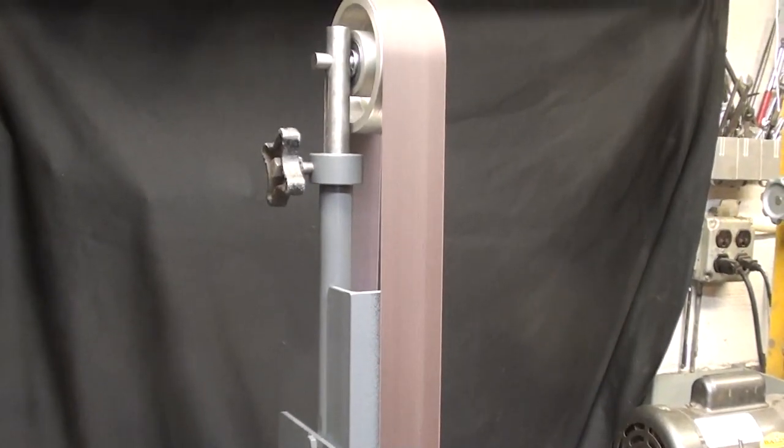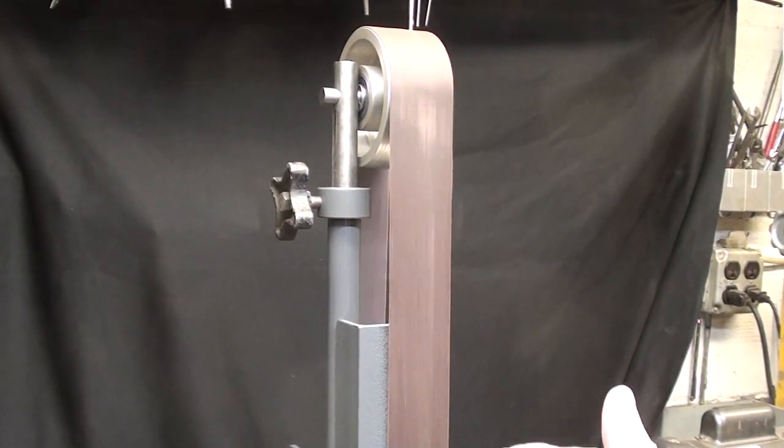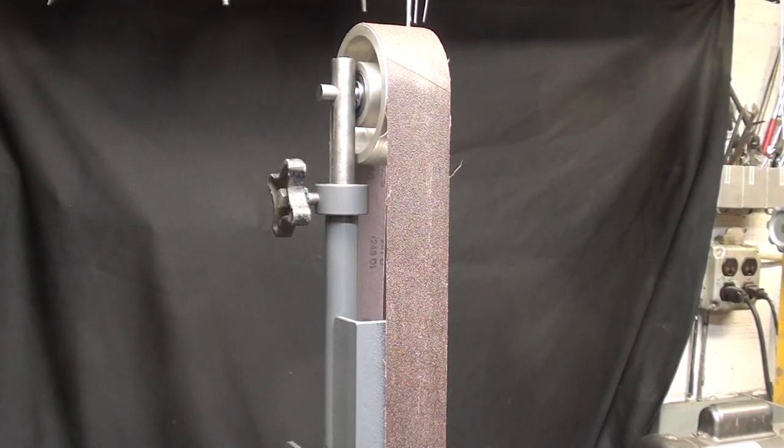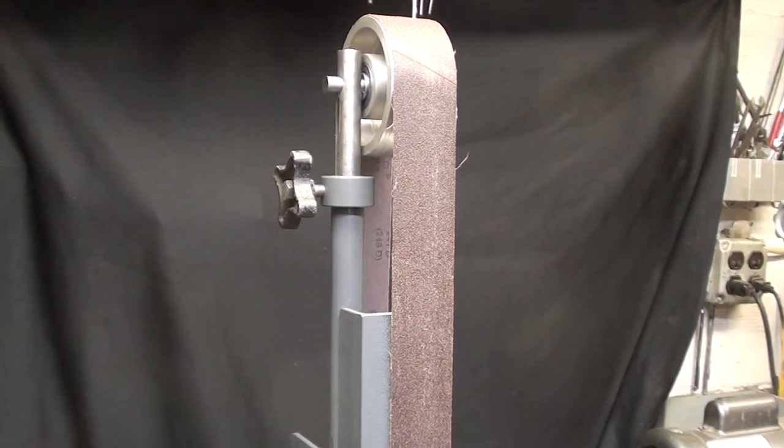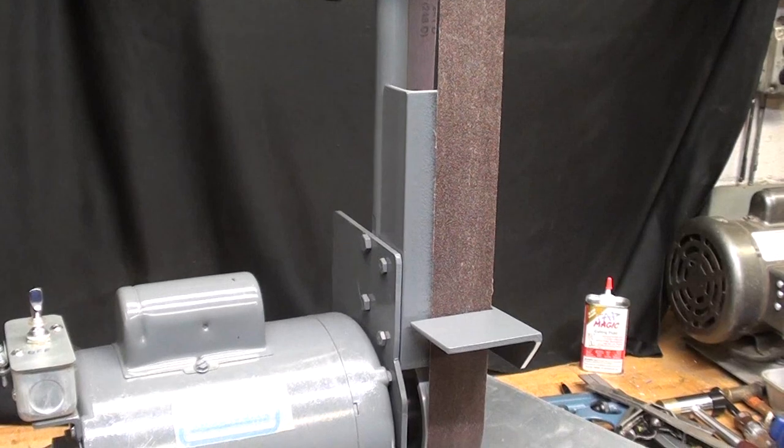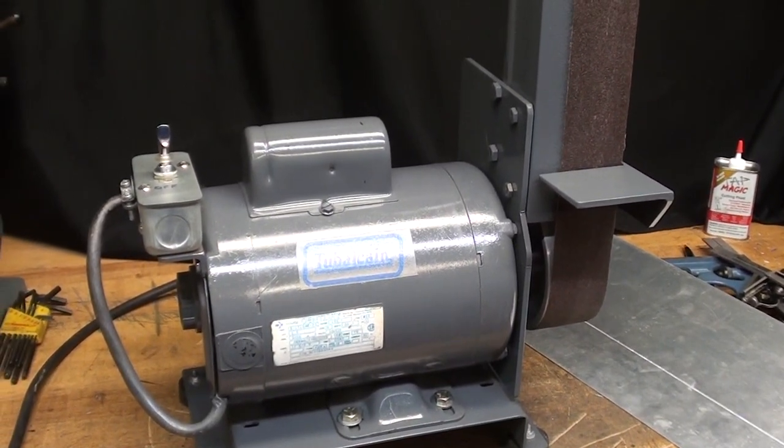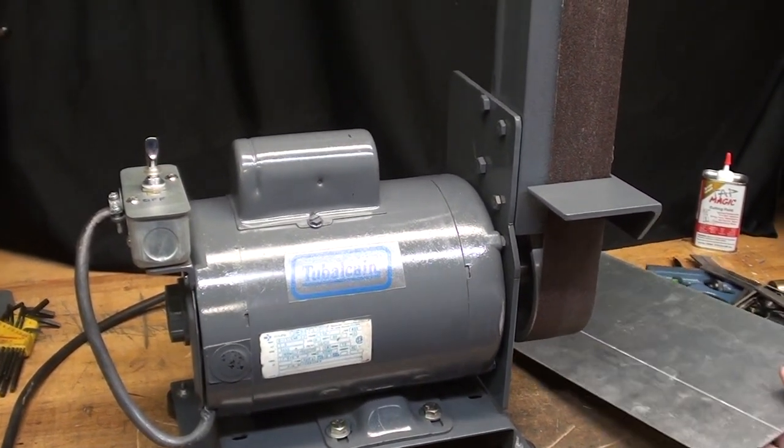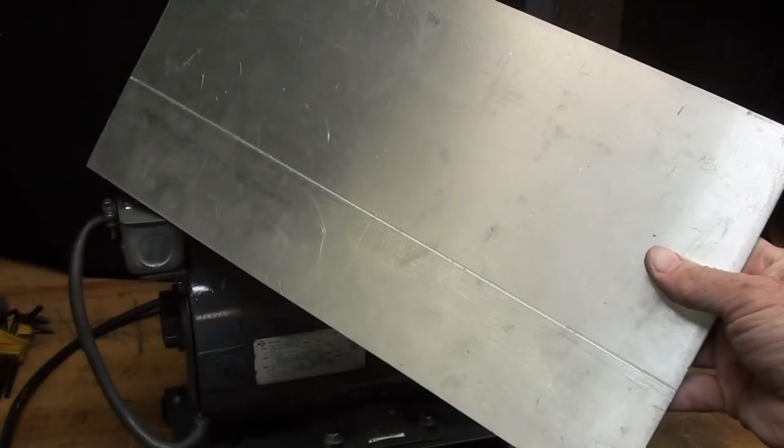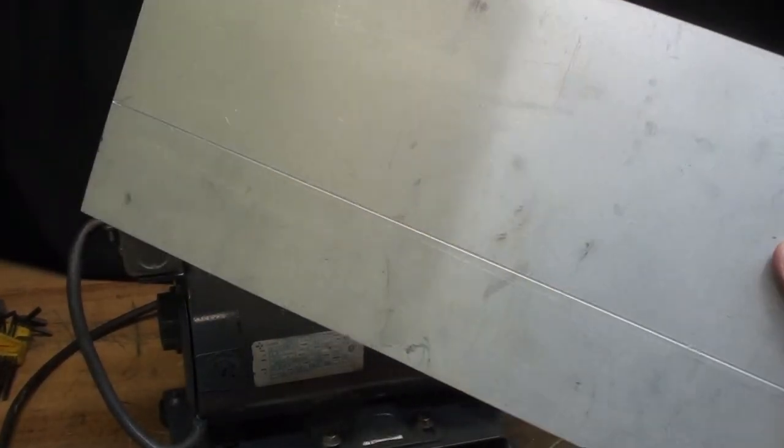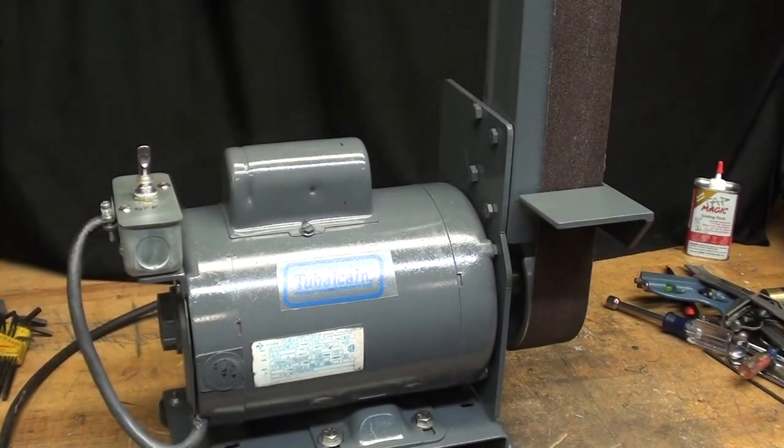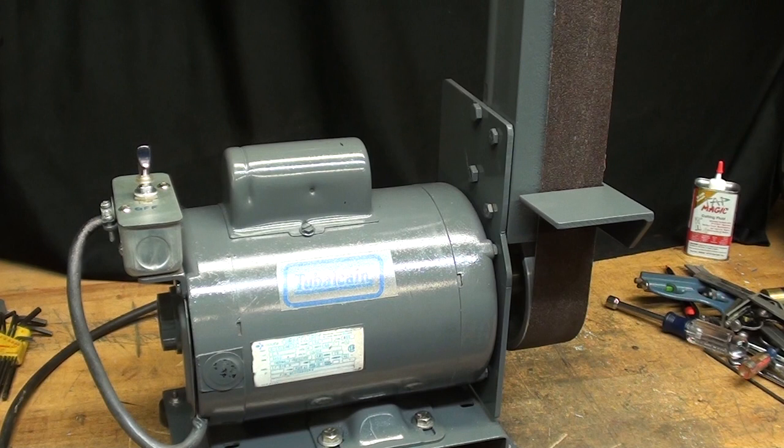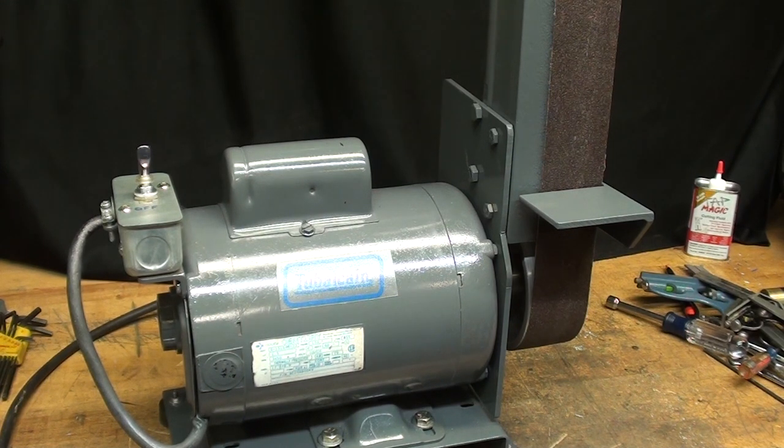Well, the sander is pretty well done except for the guards, so that's what I'm going to start on today. I'm going to model those guards pretty much off of what you saw on the Kalamazoo belt sander, and I'm going to use aluminum. I do not have a bending brake here, so what I've done, and this is an experiment, I have scored this aluminum on the milling machine, and I'm going to see if I can hand bend it fairly decent without too much wrinkling. I'm just using the bench vise for that, so I'll be back in a few minutes if this works.